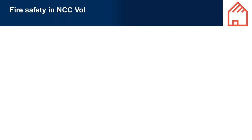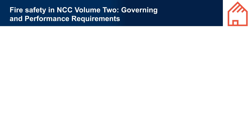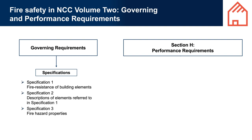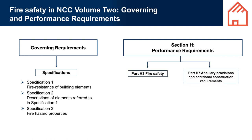Fire safety in NCC Volume 2 - governing and performance requirements. The two performance requirements in Part H3 of NCC Volume 2 reflect the key concerns for fire safety: reducing the risk of a fire spreading between buildings or structures, and warning occupants in the event of a fire so that they can evacuate safely. Protecting the building itself is not actually a primary aim of the NCC fire safety provisions. The building can burn down as long as the occupants can evacuate safely and the fire does not spread to other buildings. The DTS provisions in Part H3 also reflect these key concerns, with particular DTS provisions relating to different factors that affect the spread of fire from or to a building, and one that relates to warnings.